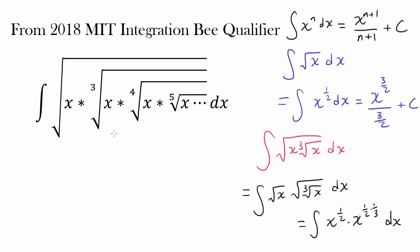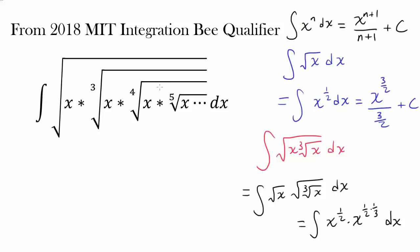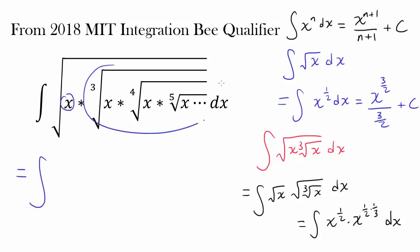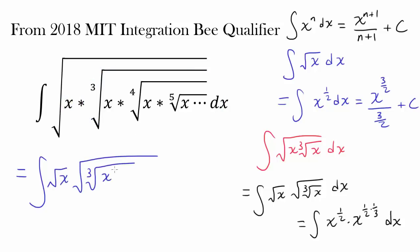Examining a simplified case gives us an idea of how to approach the much more complex general case. We now know that we can distribute the square root, then cube root, then fourth root, and so on, to break the expression into a product of x to various powers, multiply them out to get x to the nth power, and evaluate the integral.